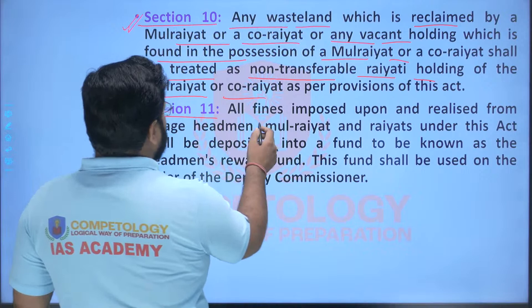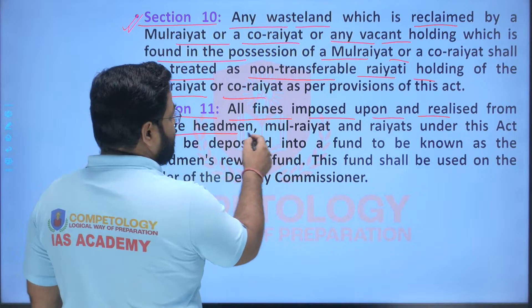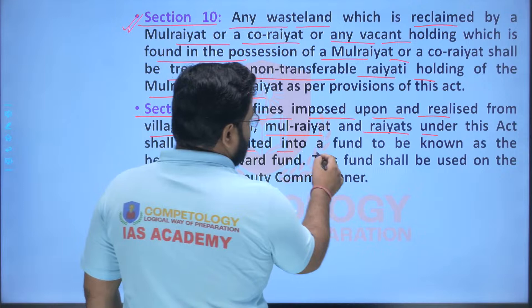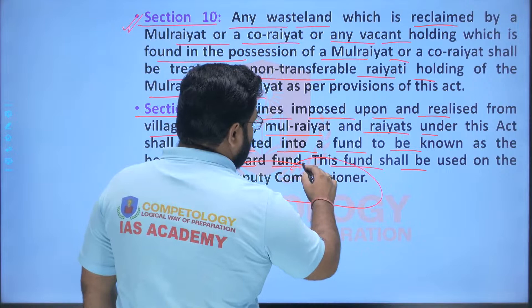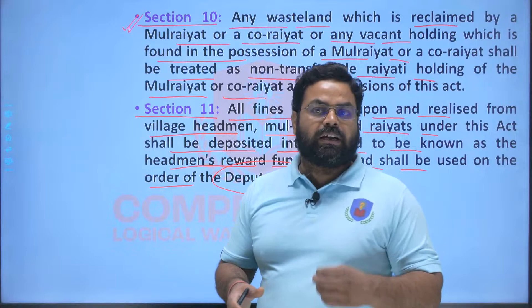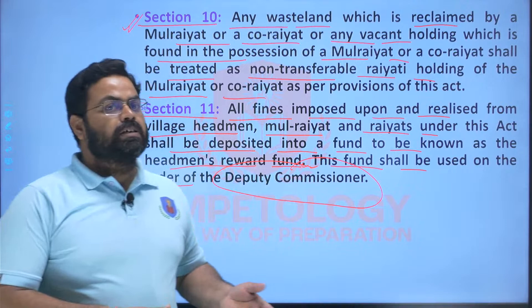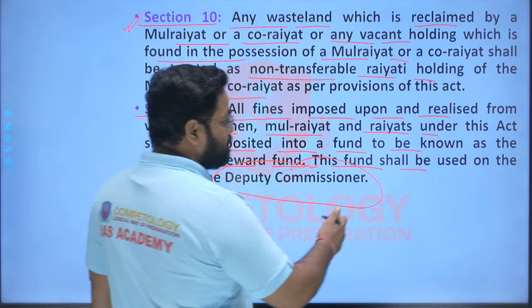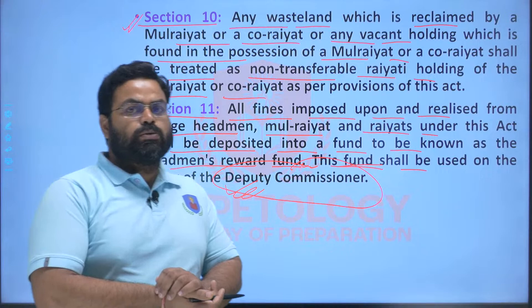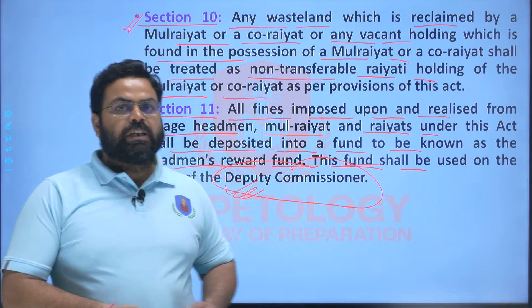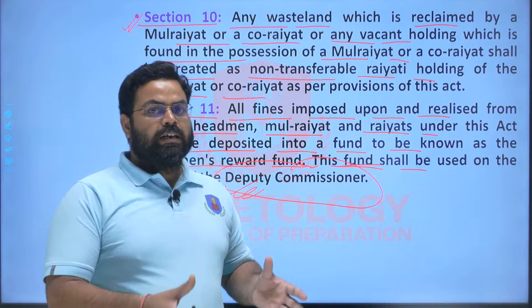Section 11 states that all fines imposed upon and realized from the village headman or Mool Raiyat under this act shall be deposited into a fund known as the Headman's Rewards Fund. This fund shall be used only on the order of the Deputy Commissioner. In most cases the DC orders this fund to be used for the improvement of land, irrigation facilities, and various other things that may ensure a higher level of agricultural produce.